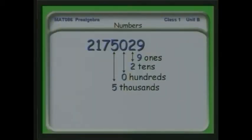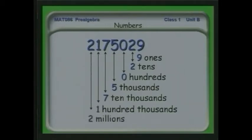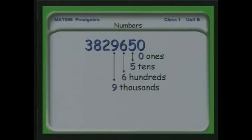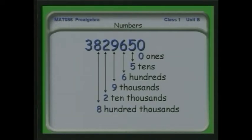We have five thousands, seven ten thousands, one one-hundred thousand, and two millions. Let's break apart another number. In this case, we have no ones, five tens, six hundreds, nine thousands, two ten thousands, eight hundred thousands, and three millions. So going from right to left, each digit is worth ten times what the one to the right of it is worth.